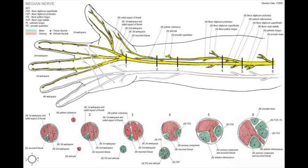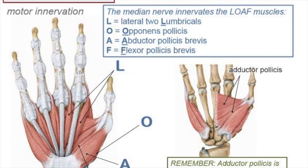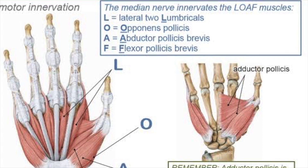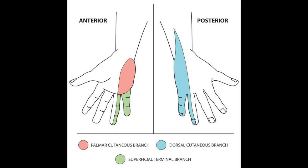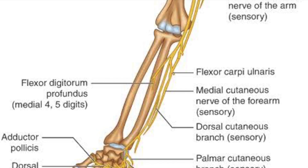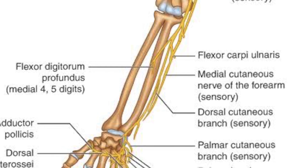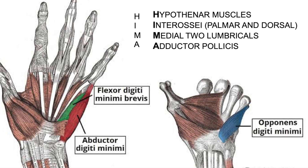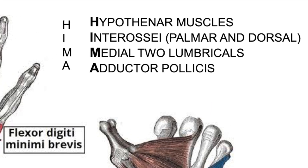The median nerve supplies all muscles of the anterior compartment of the forearm except the flexor carpi ulnaris and the medial two parts of flexor digitorum profundus. It also supplies the LOAF muscles of the hand: the lateral two lumbricals, opponens pollicis, abductor pollicis brevis, and flexor pollicis brevis. The ulnar nerve receives both sensory and motor fibers from C8 and T1. Sensory supply is mainly to the ulnar side of the palm and dorsum of the hand. Motor supply covers the flexor carpi ulnaris and medial two parts of flexor digitorum profundus in the forearm, plus the HIMA muscles in the hand: hypothenar muscles, interossei (palmar and dorsal), medial two lumbricals, and adductor pollicis.